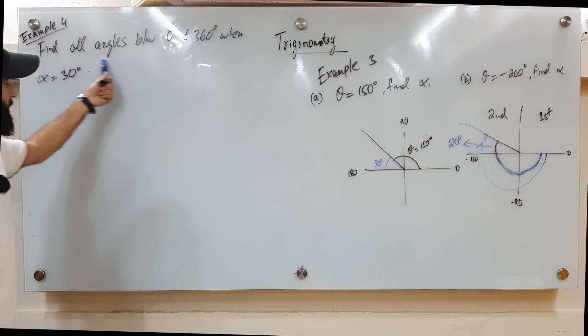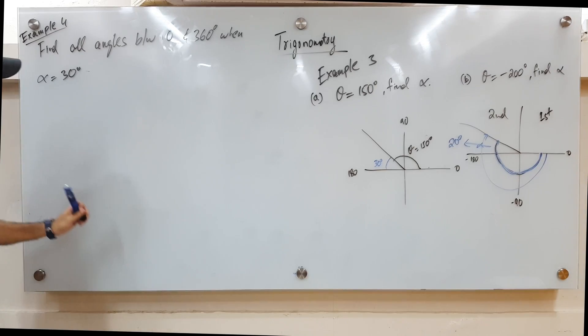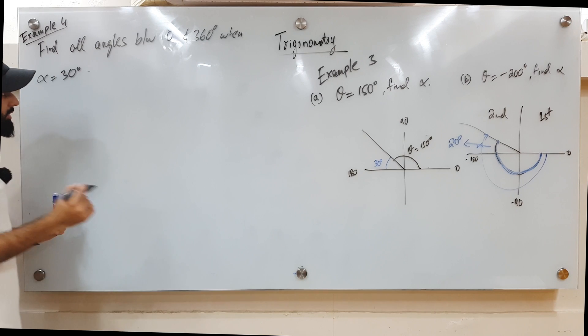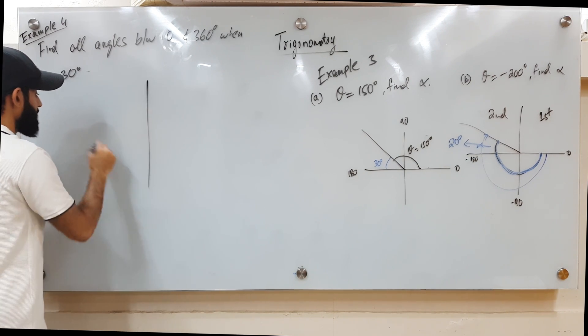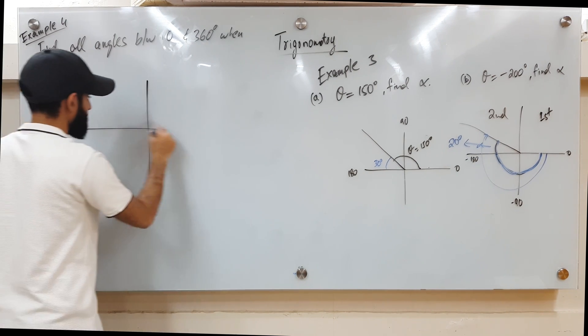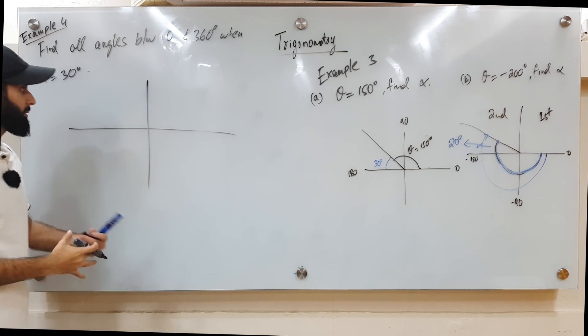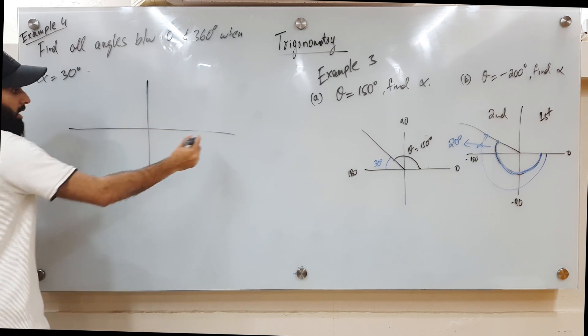Here's example 4, where we have to find all the angles between 0 and 360 when alpha equals 30 degrees. Since the question has not specified what quadrant we're in, that means we have to consider all four quadrants.